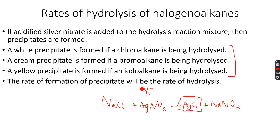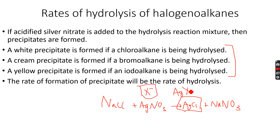The faster the hydrolysis, the faster the X⁻ ion is produced, and the faster the X⁻ ion is produced, the faster the AgX precipitate is produced. This makes a lot of sense because as soon as X⁻ is produced it combines with the Ag⁺ ions to form AgX. So the faster the precipitate is produced, the faster the rate of hydrolysis.